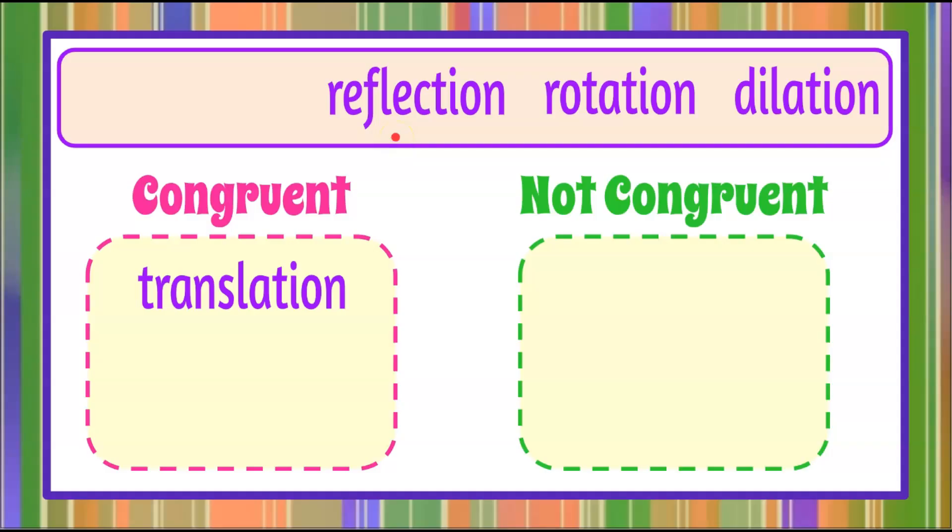Reflection. Think of that as a mirror image. So when you look in the mirror, you see a reflection of yourself. So you're going to reflect the image maybe over the x-axis, over the y-axis, or the equation of a given line. But when you reflect it, it has to be a congruent image identical to the original. So reflection is going to go in the congruent category. If it's not a congruent image, it's not a reflection.